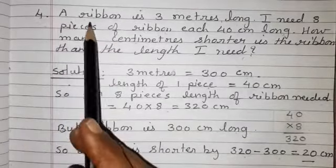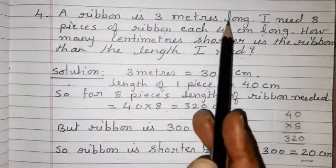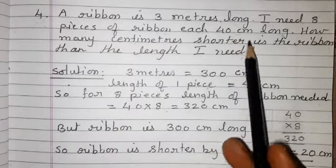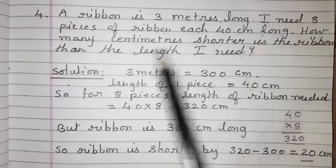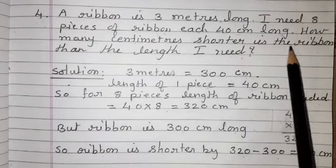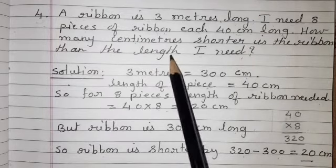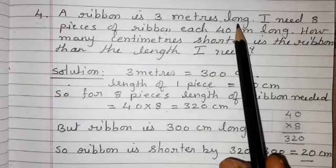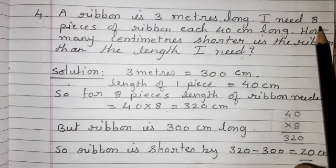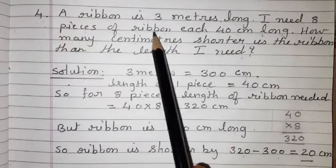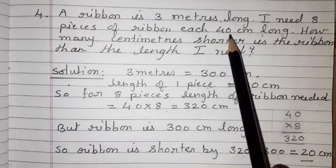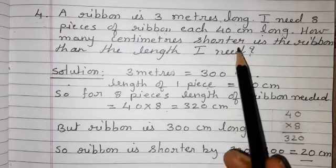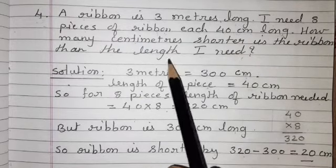Question number 4: a ribbon is 3 meters long. I need 8 pieces of ribbon, each 40 centimeters long. How many centimeters shorter is the ribbon than the length I need? In this question, the ribbon is 3 meters long and I need 8 pieces of ribbon, each piece 40 centimeters long.